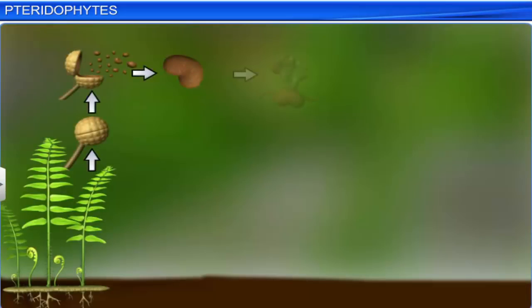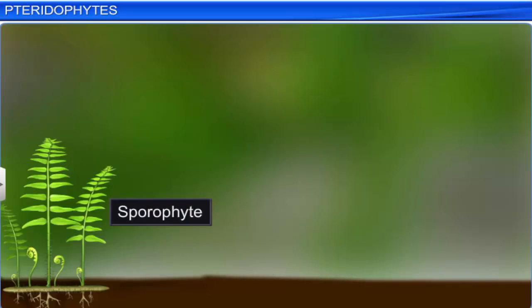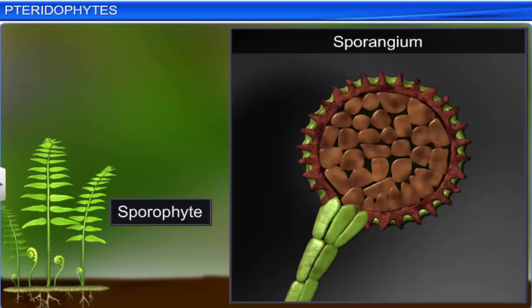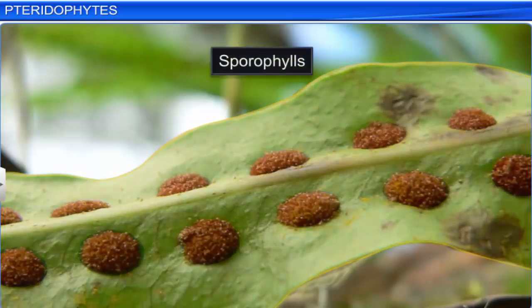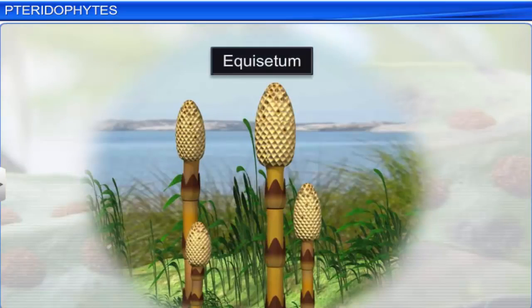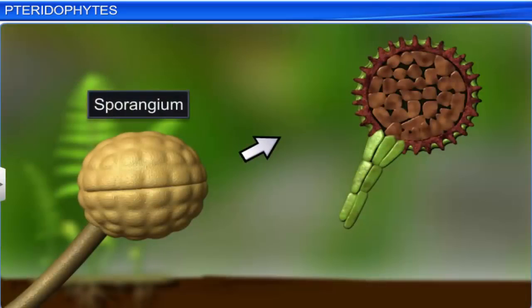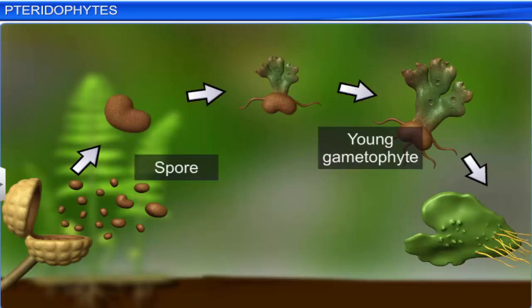The life cycle of a pteridophyte begins when the plant body, a sporophyte, bears sporangia, which are subtended by leaf-like appendages called sporophylls. However, in some genera like Equisetum, sporophylls might form distinct and compact structures called strobili or cones. The sporangia produce spores in spore mother cells by meiosis, which germinate into gametophytes called prothallus.